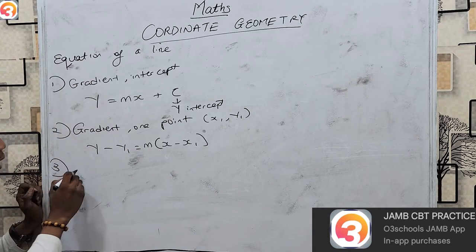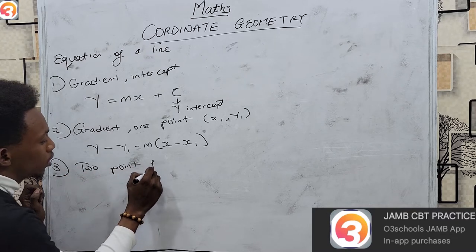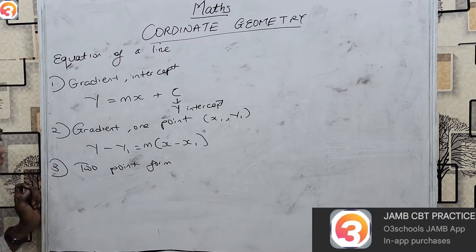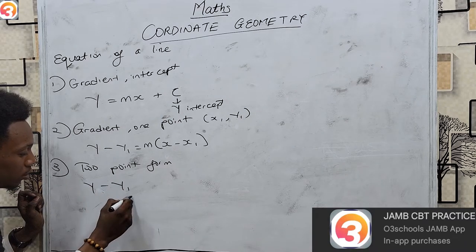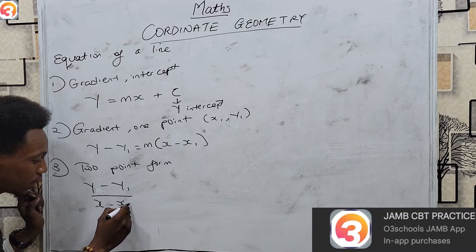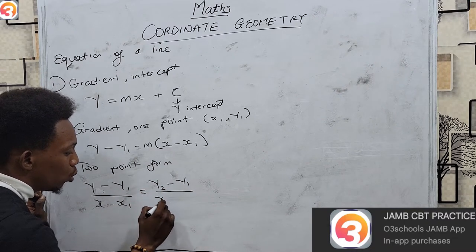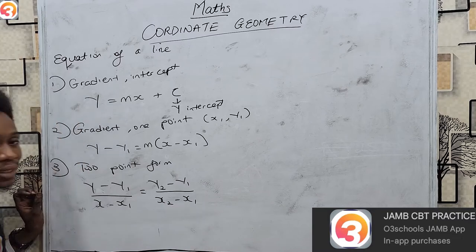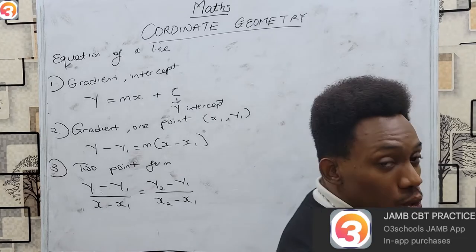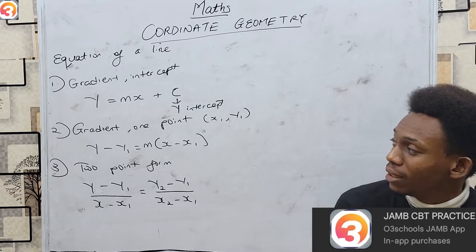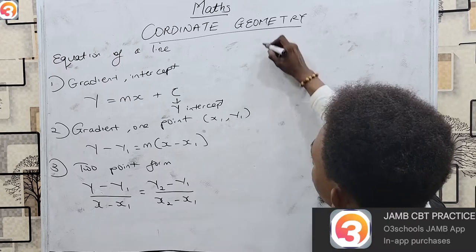Last but not least, we have the two-point form. In this case, the equation simply becomes: y minus y1 over x minus x1 equals y2 minus y1 over x2 minus x1. That is your two-point form. So if you are ever asked to find the equation of a line, the equation always comes in one of these three forms.